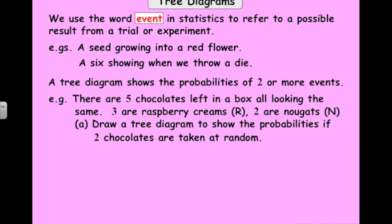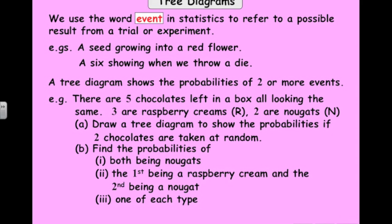In this one we've got five chocolates left in a box, all looking the same. Three are raspberry creams and two are nougats. We're going to take two chocolates out at random. You could take those two chocolates at the same time, but think of this as taking one chocolate then taking another — it'll be easier to think of it like that. Once we've got our tree diagram we'll be able to answer questions like: what's the probability we get two nougats, the first is raspberry and the second nougat, or the probability we get one of each type. That last one implies that the order doesn't matter.